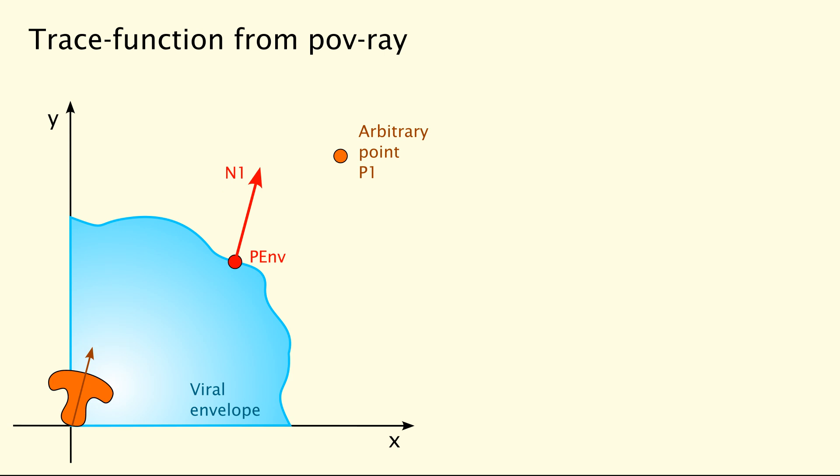These two vectors are all we need. We will use the normal vector for rotating our protein until its axis corresponds to the normal vector. This step is not trivial and I will talk about it below. In the second step, we then transfer our protein to the position where the negative position vector had hit the viral envelope.